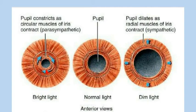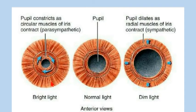In bright light, the pupil constricts so that a large amount of light does not enter the eye, because a large amount of light in bright conditions would damage it. The circular muscles contract and, as a result, the radial muscles relax. One pair of muscles contracts and the other relaxes — they act in opposite directions, so they are called antagonistic muscles. When the pupil constricts or reduces in size, it is because of the contraction of the circular muscles.